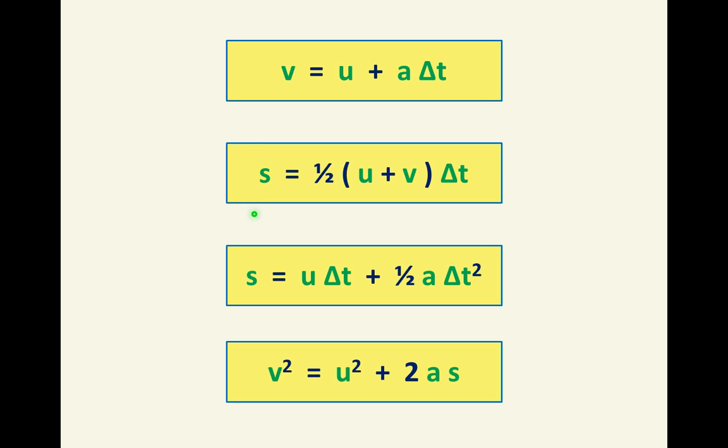This one here is also intuitive in that v plus u divided by 2 is the average velocity of the object. And if we multiply the average velocity by the time taken, we'll get the distance travelled. This one's the one that we need to be careful of. It's quadratic in t, which means that sometimes we will need to use the quadratic formula. And sometimes it's easier to avoid this equation altogether. However, it does come into its own when u is zero, because then this term won't be there. And we just have a nice simple expression, which we can use the square root function for.